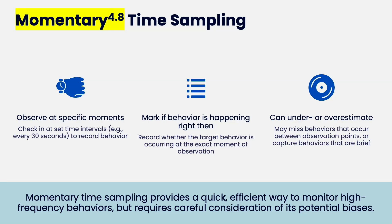When I need teachers to take data, this is what I give them — a five-minute interval. Every five minutes their phone goes off, they look at the child, and mark yes or no for behavior occurring. It's very easy to do for an hour a day and gives a sampling of what's going on. This can under- or overestimate — you're sampling the smallest amount of time for whether behavior is occurring, so it's the least precise of all the types of data collection.